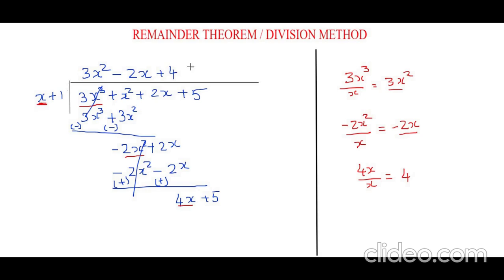4 times x, which is 4x, and plus times plus is plus, 4 times 1 is 4. Now again subtraction: cross it out, so your answer would be 5 minus 4, which is 1. Isn't it very simple? You just need to follow these steps.